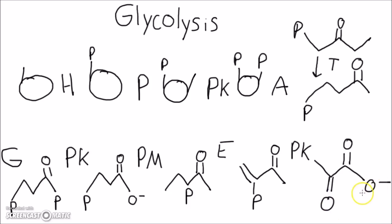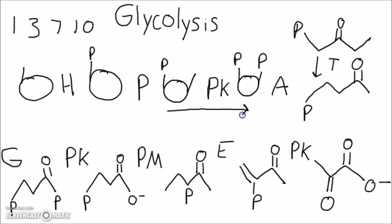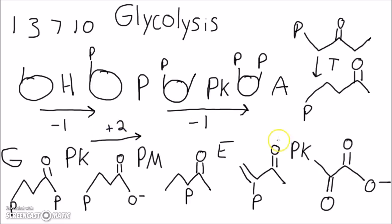Just make sure you can draw this. Remember that the key reactions are 1, 3, 7, and 10. The first two use an ATP each, and in the second two you gain 2 ATP each — so you have a net of plus 2 ATP.